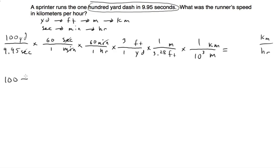So I'm going to take 100 divided by 9.95 times 60 times 60, make sure we're not forgetting anything, times 3 divided by 3.28 divided by 10 to the third is 1,000. So it will be easier to put it in our calculator that way. So 100 divided by 9.95 times 60 times 60 times 3 divided by 3.28 divided by 1,000 is 33.